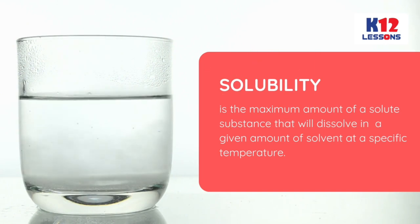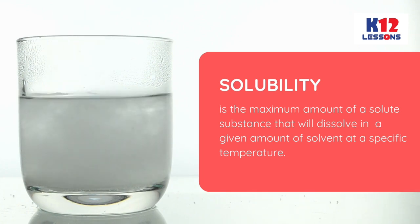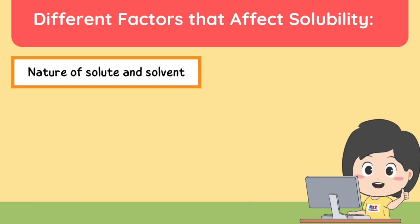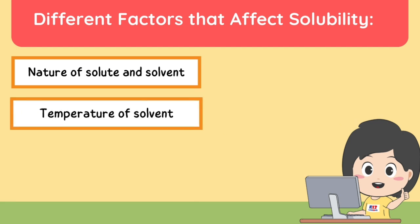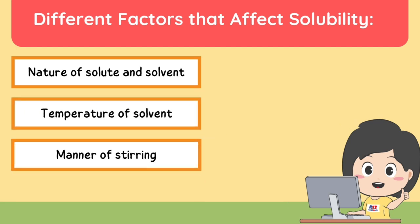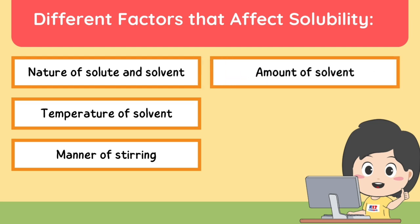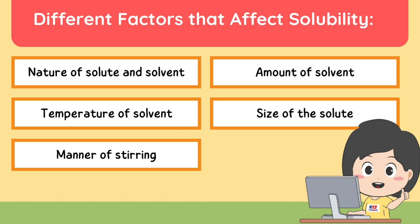Solubility is the maximum amount of a solute substance that will dissolve in a given amount of solvent at a specific temperature. There are different factors that affect solubility. The following are: the effect of nature of solute and solvent, temperature of solvent, manner of stirring, amount of solvent, and size of the solute.